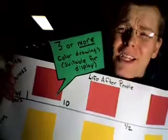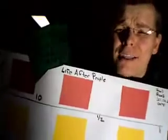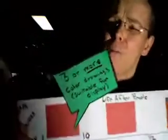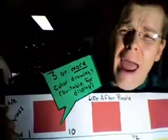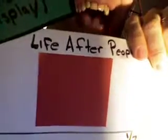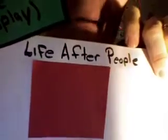You and your partner are going to make this timeline. You make one half of the timeline, and your partner makes the other half. Start off by putting your name on the paper and the school-wide heading. Don't forget the title: Life After People.